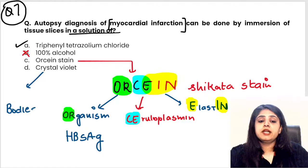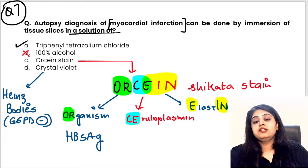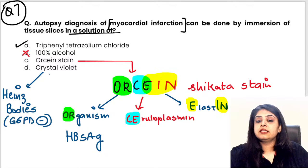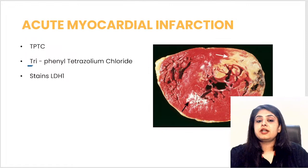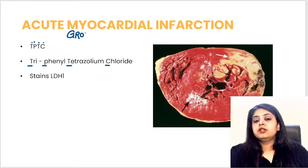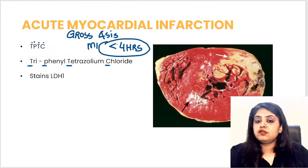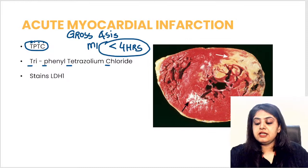The fourth option is crystal violet — used in hematology. Crystal violet stains Heinz bodies, which are seen in G6PD deficiency anemia. So all the alternative options are now settled. Coming back to the correct answer: for myocardial infarction, TTC — triphenyl tetrazolium chloride — is used.